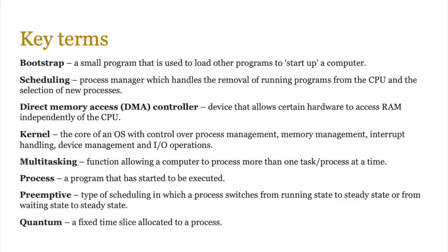The Direct Memory Access Controller is a device that allows certain hardware to access RAM independently of the CPU. In the von Neumann architecture the control unit uses the control bus to send signals to various hardware devices, and if those devices need to access RAM they must notify the CU — which can get overwhelmed. So to prevent that load, the DMA comes into play: if you need to access memory, go via the DMA. It acts like a personal assistant to the control unit, making processing manageable so the CU can concentrate on more important tasks.